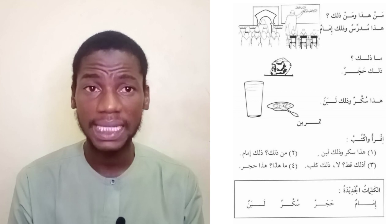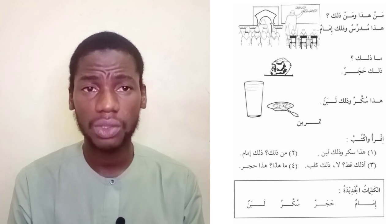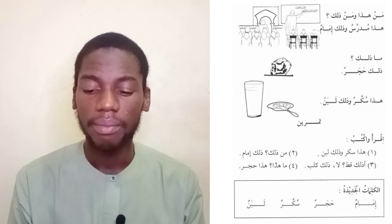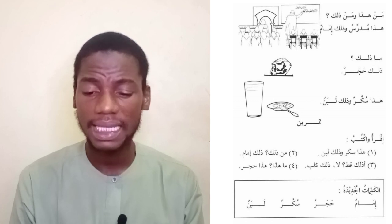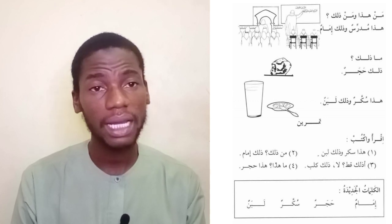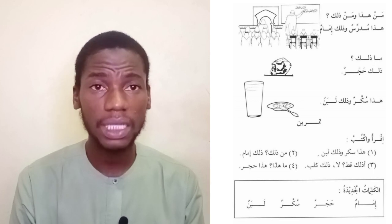In this lesson we have one exercise: 'iqraa waaktub' — read and write. 'Hatha sukkarun wa thalika labanun' — this is sugar and that is milk. 'Man thalik?' — who is that? 'Thalik imamun' — that is an imam. 'A thalik qittun?' — is that a cat? 'La, thalik kalbun' — no, that is a dog. 'Ma hatha?' — what is this? 'Hatha hajarun' — this is a stone.